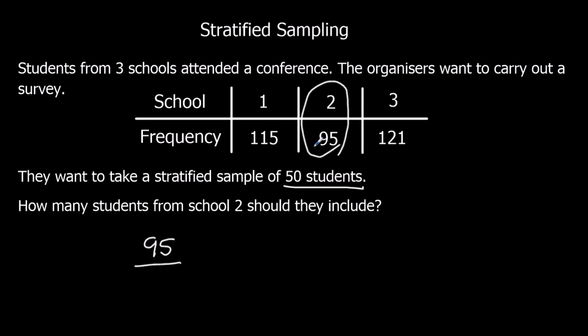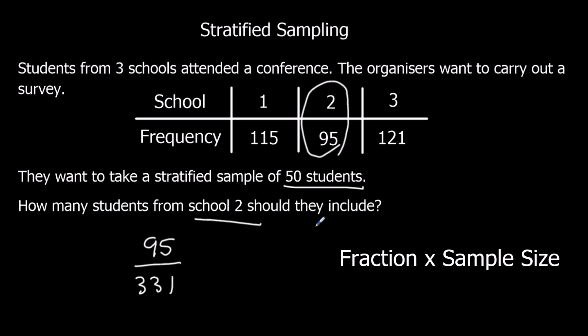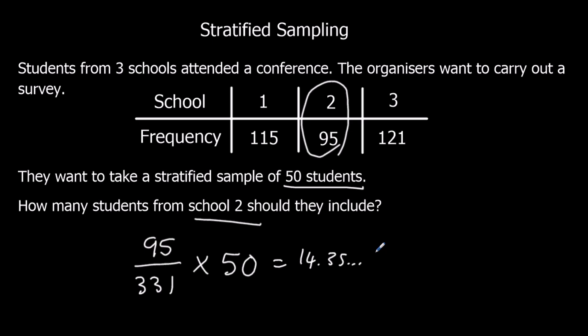To get the total, we add them up: 115 plus 95 plus 121, which is 331. So the fraction from school 2 is 95 over 331. We multiply by the sample size of 50: 95 over 331 times 50. Typing it into the calculator gives 14.35. We can't have 14.35 students, so the nearest whole number is 14.